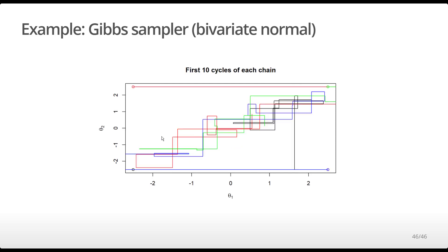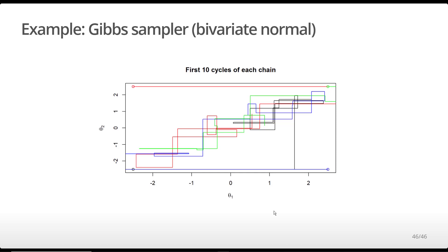In this last slide, I have plotted the first ten cycles of the four Markov chains, distinguishing each chain by a different color. Note that because theta1 and theta2 are drawn in separate steps, the chains only move horizontally or vertically at each step, depending on which parameter is being sampled. One thing you can notice from this plot is that even though the four chains started at four different positions, they pretty quickly started moving toward the more likely part of the posterior, which is additional evidence that the chains are converging rather quickly to the target distribution.